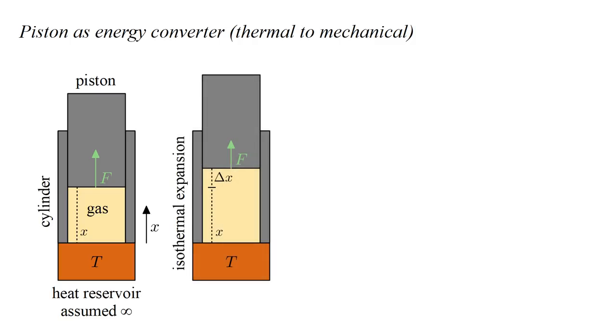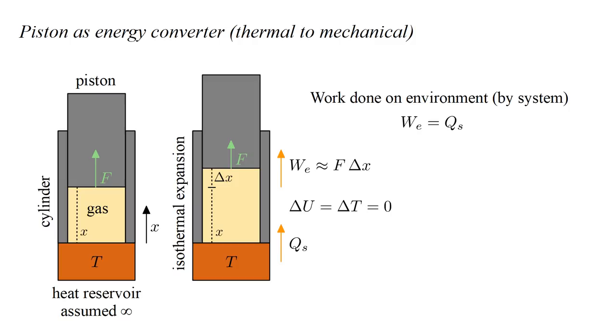If the gas expands, and this force acts through a displacement Δx, then work W_E approximately equal to F·Δx is done on the environment. Approximately, because the force is not constant, but varies with x. Because the gas is in thermal equilibrium with a heat reservoir, its temperature, and therefore its internal energy, does not change. Heat Q_S flows from the reservoir to the gas to maintain its temperature. By the first law, the work done by the gas must equal the heat transferred to the gas. Therefore, the system has converted heat into mechanical work.